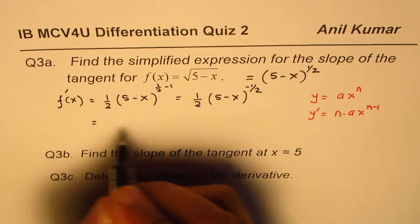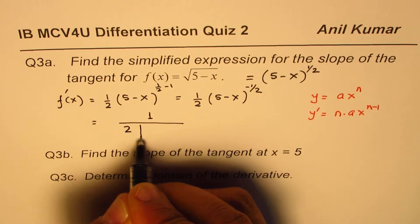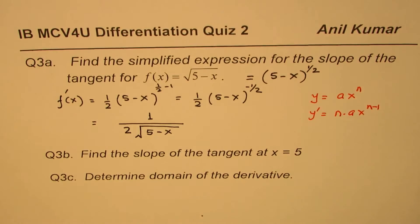So this could be written as 1 over 2 square root of (5 - x). So that is the simplified expression for the slope of tangent line. We don't have to find the equation of tangent line or anything like that. So that is the answer for us.